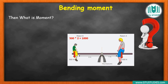On the right side, the weight is 1000 Newtons. On the left side, the distance is 1 meter. It is weight into distance from the pivot, so the moment on the left is 1000. The moment amounts are equal on both sides — this demonstrates the principle of balance of moments.